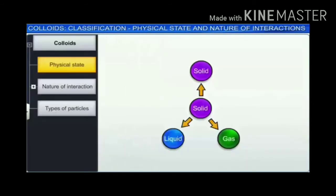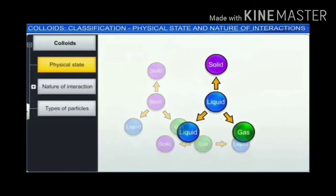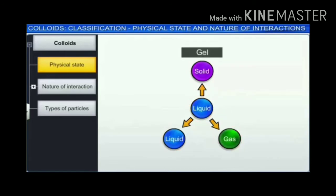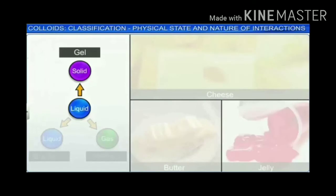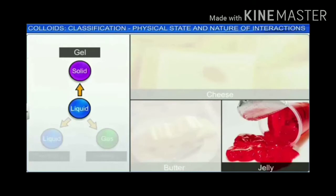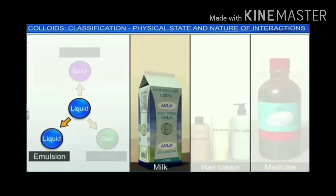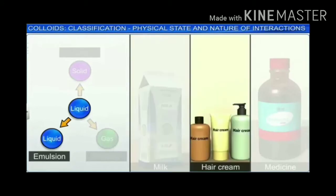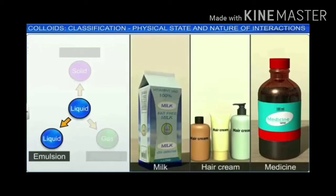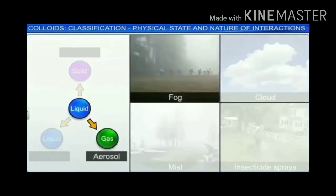Dispersion of a liquid in a solid, liquid, or gas dispersion medium leads to the formation of a gel, emulsion, and an aerosol respectively. Examples of gels are cheese, butter, and jellies. Milk, heavy cream, and certain medicines are examples of emulsions. Fog, cloud, mist, and insecticide sprays are examples of aerosols.